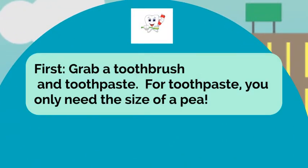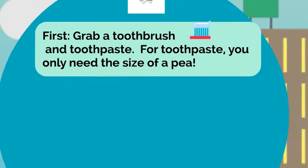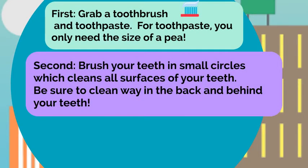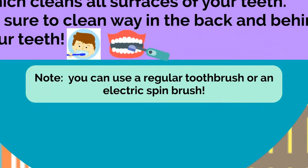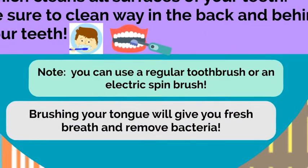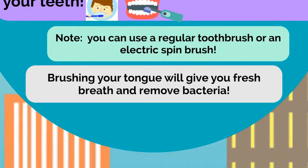First, grab a toothbrush and toothpaste. For toothpaste, you only need the size of a pea. Also, make sure your toothpaste has a special mineral in it called fluoride. Second, brush your teeth in small circles, which cleans all surfaces of your teeth. Be sure to clean way in the back and behind your teeth as well. You also want to make sure you hold your toothbrush at a 45 degree angle. You can use a regular manual toothbrush or an electric spin brush — both work well to clean your teeth. Brushing your tongue will give you fresh breath and remove icky bacteria.